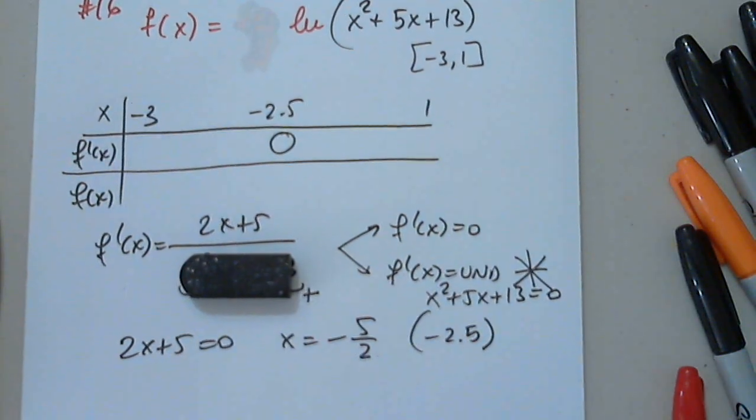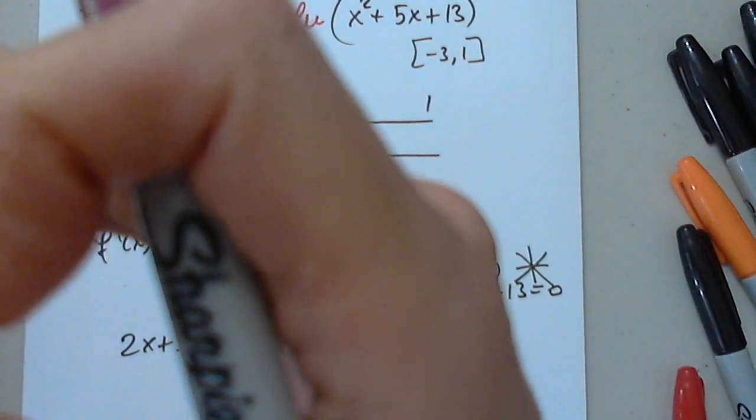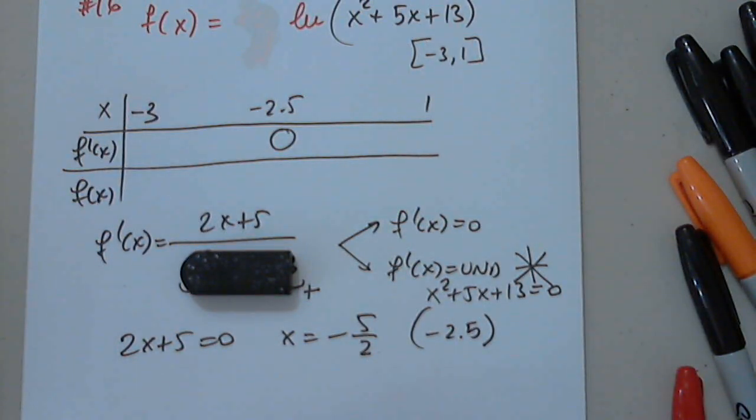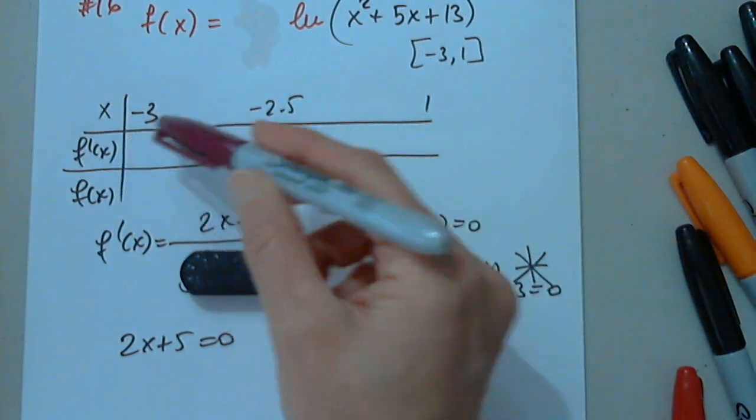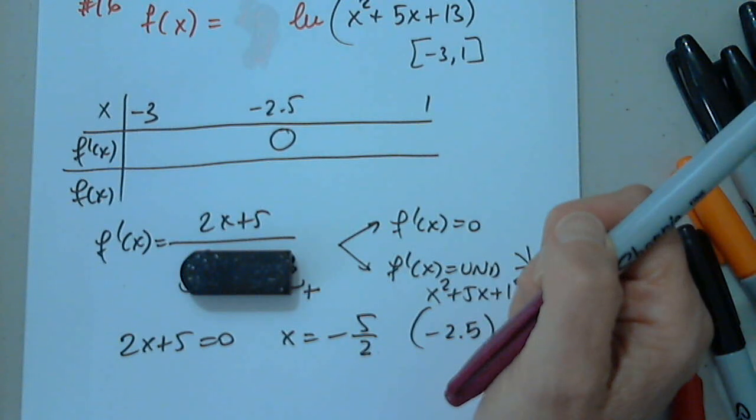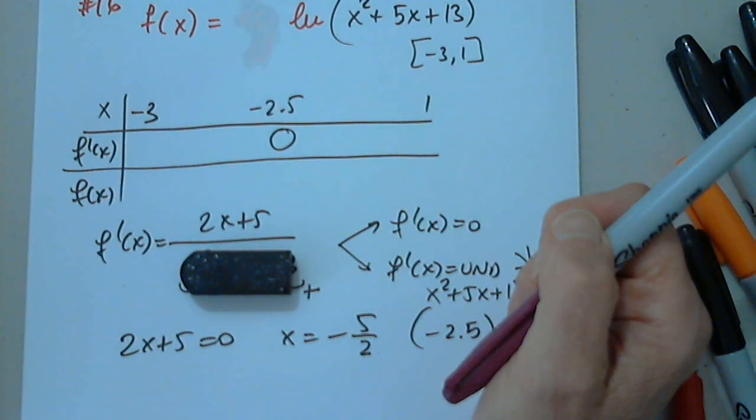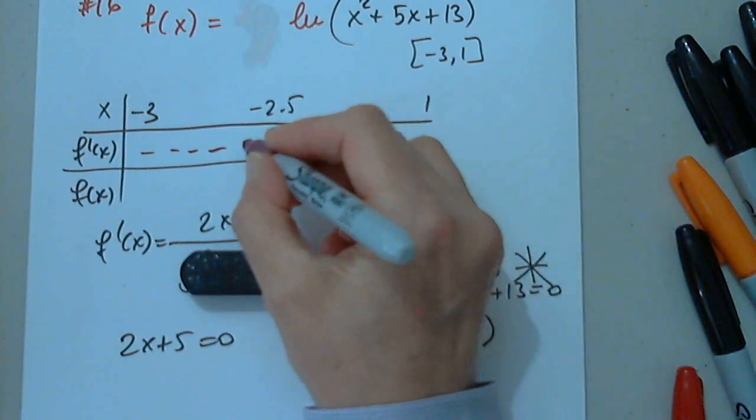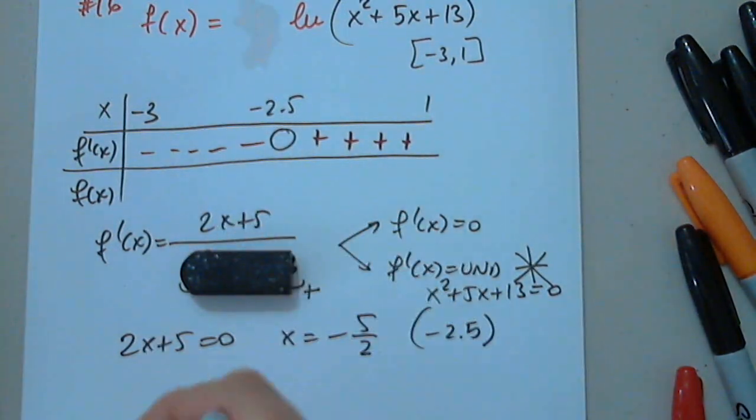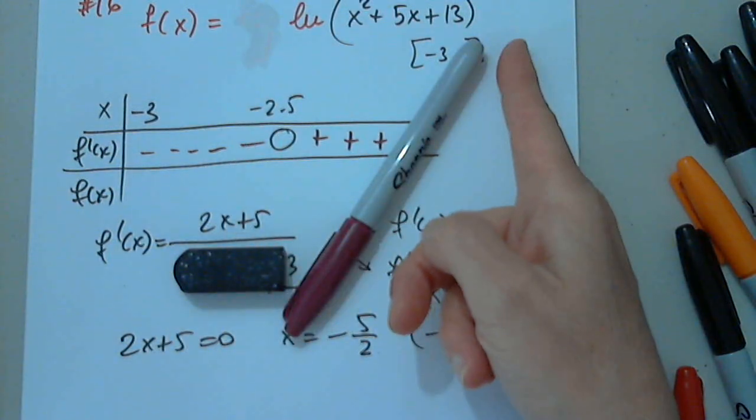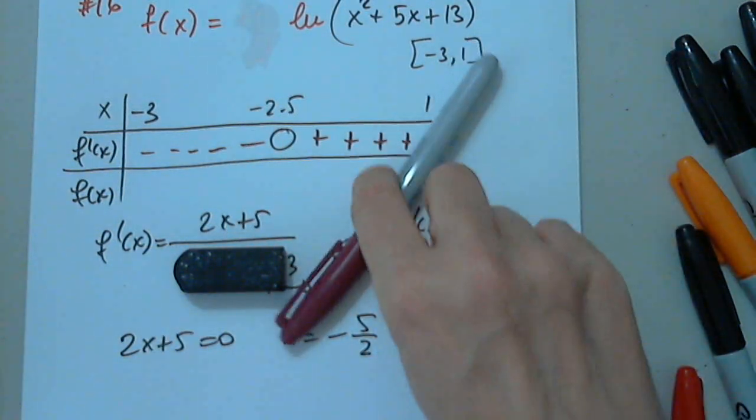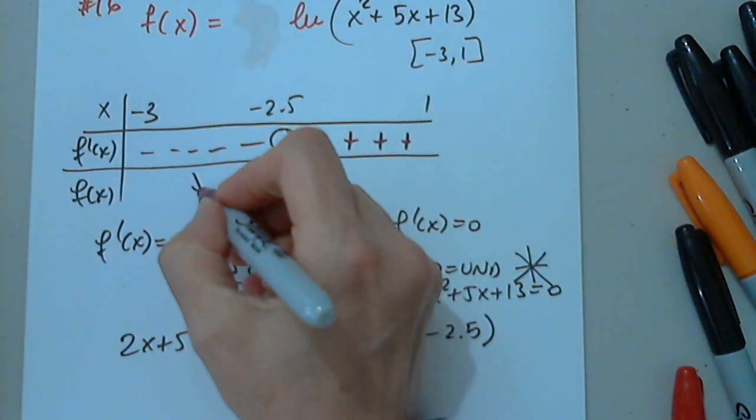Can anyone tell us the sign of 2x plus 5 before and after it's 0? Negative before. Right. Of course. We don't have to think. Please remember, we don't have to think. This is a linear function with a positive slope. Where is it coming from? Negative. Right. And where is it going? Positive.